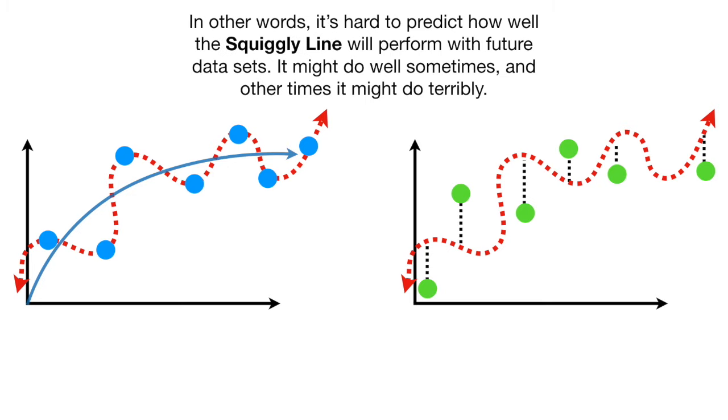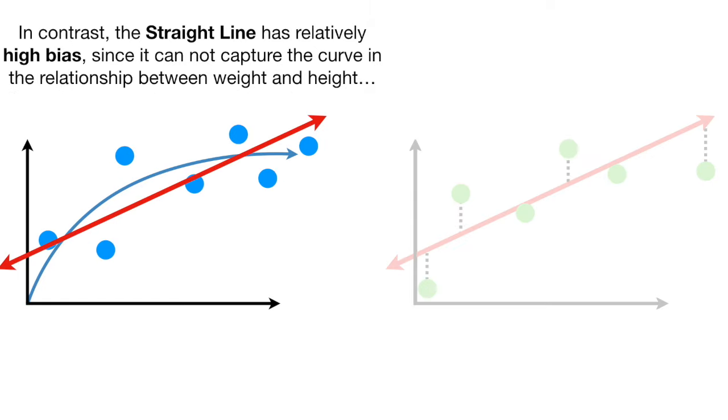In other words, it's hard to predict how well the squiggly line will perform with future data sets. It might do well sometimes, and other times it might do terribly. In contrast, the straight line has relatively high bias since it cannot capture the curve in the relationship between weight and height.